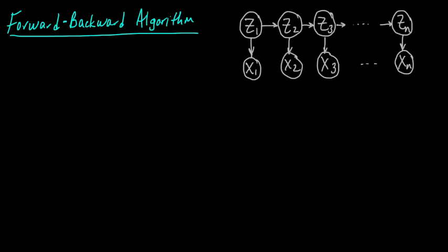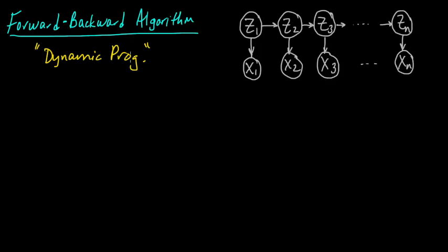The forward-backward algorithm is what we use to do inference in the hidden Markov model, and it is a perfect example of dynamic programming. This is not programming in the sense of writing a computer program — before computer programs existed, people used the word programming for optimization. Dynamic programming was first used for optimization-type problems, but more generally it can also be used for doing inference. There are not very many fundamentally different algorithmic approaches to efficient exact inference or optimization, and dynamic programming is one of those.